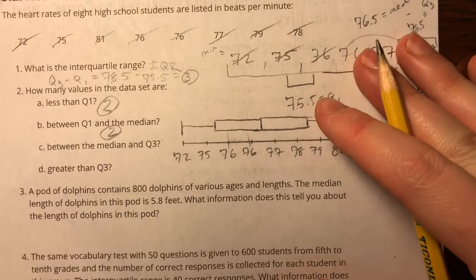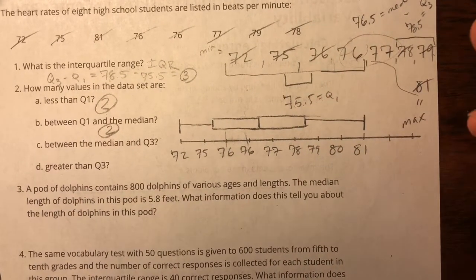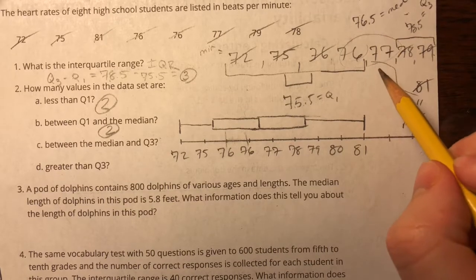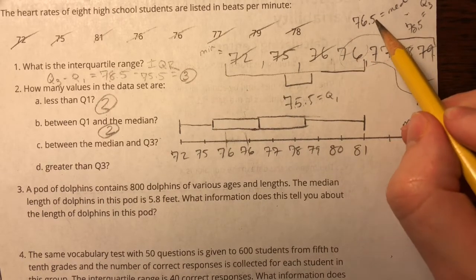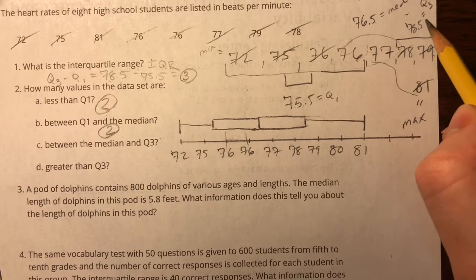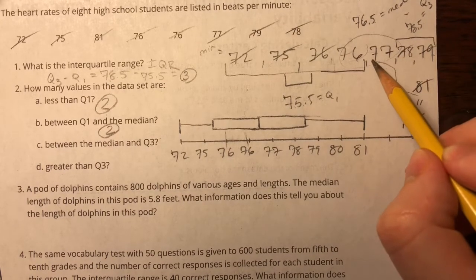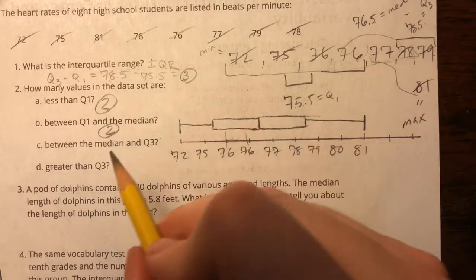C. Between the median and Q3. So if we look at the median and Q3, median 76.5, Q3 is 78.5. I have two numbers, 77 and 78 in between those two.